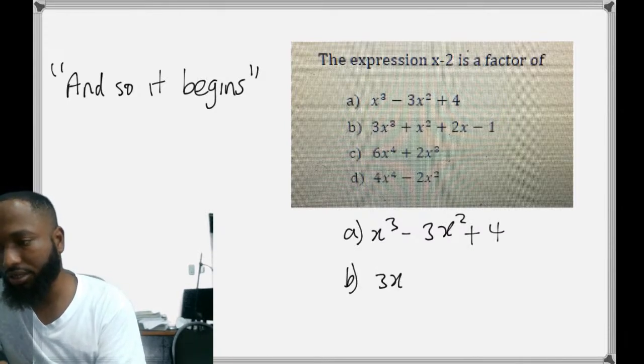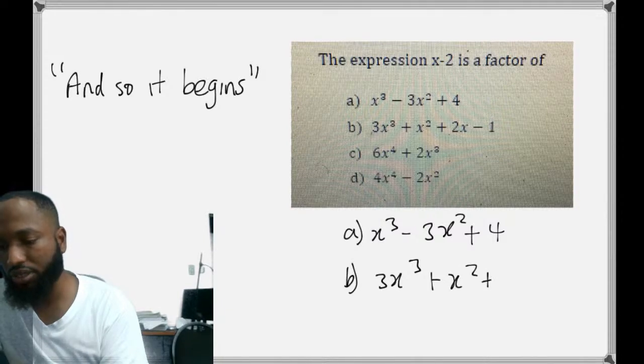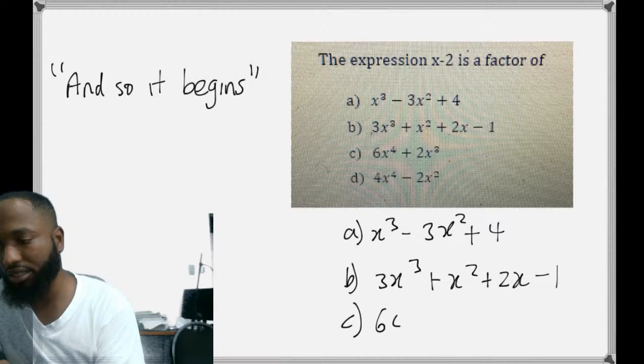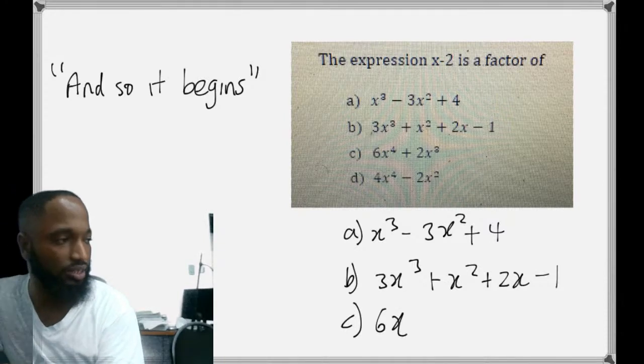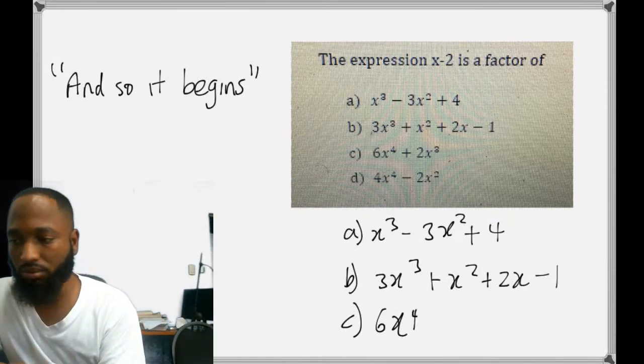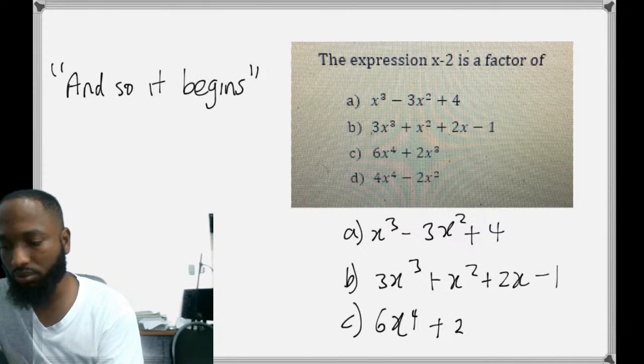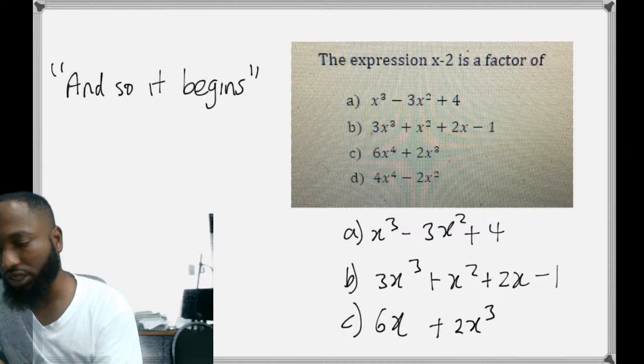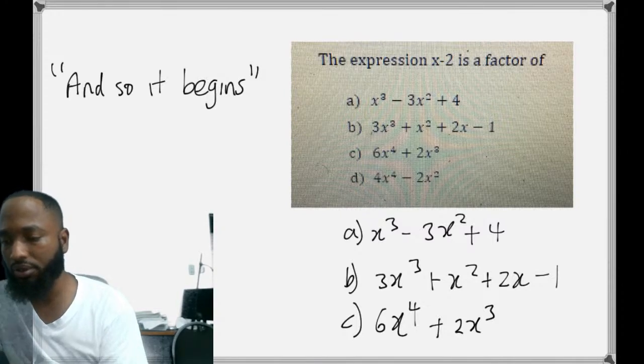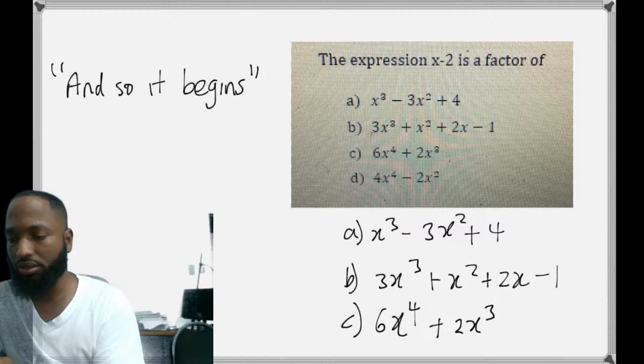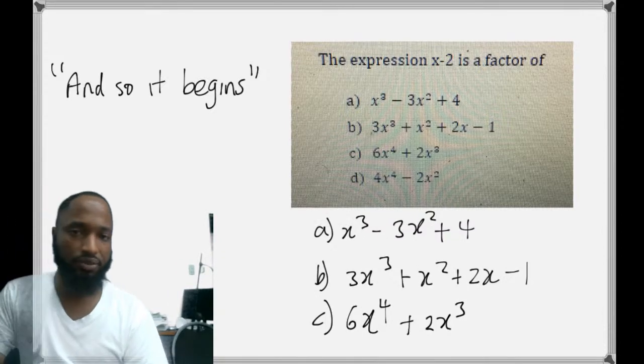And let me just write out. A is really x³ minus 3x² + 4. B is 3x³ + x² + 2x - 1. C is 6x⁴ + 2x³. So which one? I ain't seeing no answers yet. If you're in Form 4, anyone to register to the class, you can also check my website, you can message me on WhatsApp, go on Instagram and you'll see the numbers, everything.